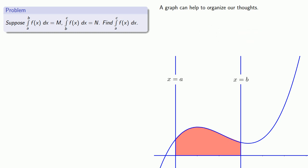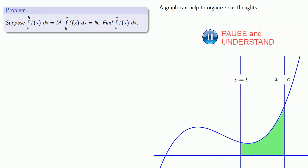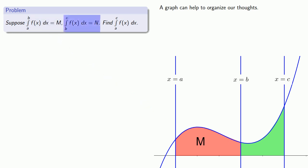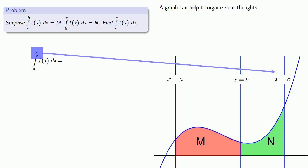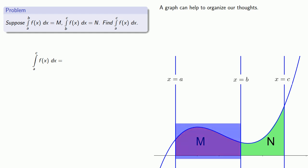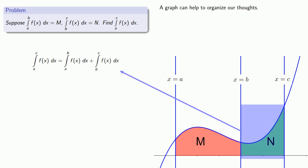Meanwhile, the second definite integral represents the area under y equals f of x, above the x-axis, from x equals b to x equals c. Since the graph and the x-axis don't change, we can put them both into the same picture. We know this first region has area m and this second region has area n. The integral from a to c represents the area under the graph above the x-axis from x equals a to x equals c. We can find that by adding together the area from x equals a to x equals b, which corresponds to our first definite integral, together with the area from x equals b to x equals c, which corresponds to our second definite integral.